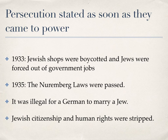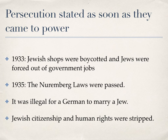The Nazis used propaganda to paint the Jews in a subhuman light. Persecution started as soon as they came to power, so in 1933 Jewish shops were boycotted and Jews were forced out of government jobs. Their shops would also be marked out — with the word 'Jew' written on them or a Star of David painted on the front of the shop.